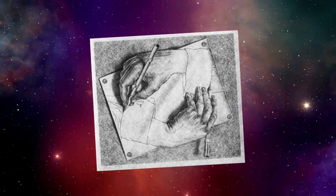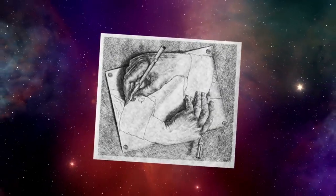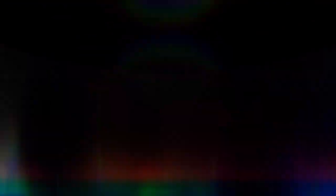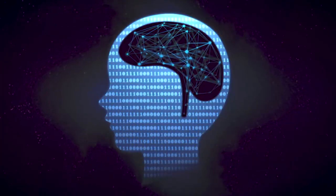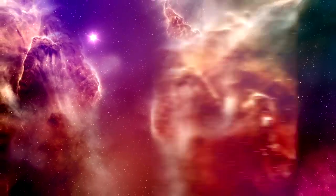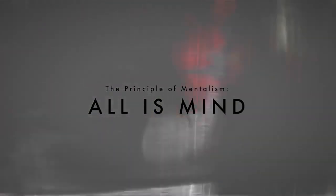But how can the universe be created by the All if the All is infinite and cannot add nor subtract a portion of itself since there is nothing new outside the All? Well, similar to how you create a universe of your own in your mentality, so does the All create universes in its own mentality. As the first Hermetic Axiom states, All is mind.